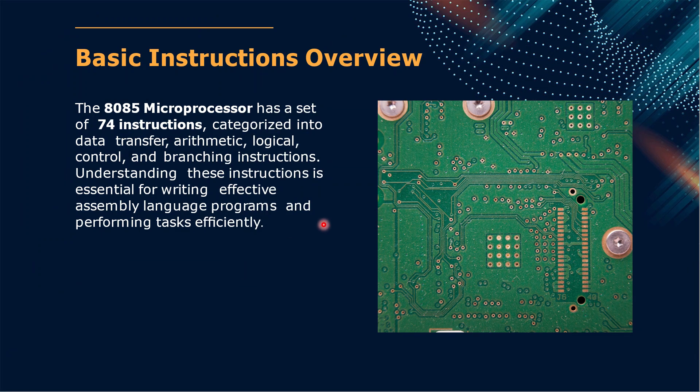Basic Instruction Overview: The 8085 microprocessor has a set of 74 instructions categorized into data transfer, arithmetic, logical, control, and branching instructions. Understanding these instructions is essential for writing effective assembly language programs and performing tasks efficiently.